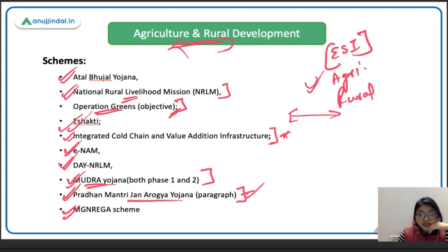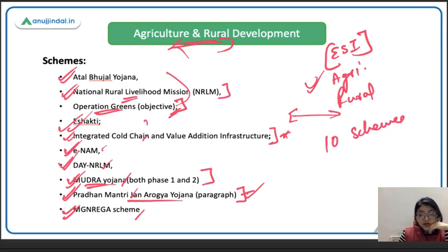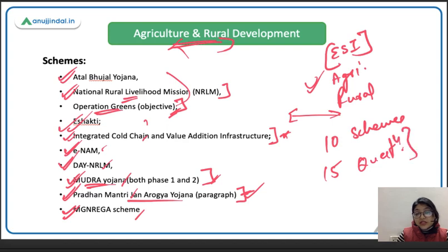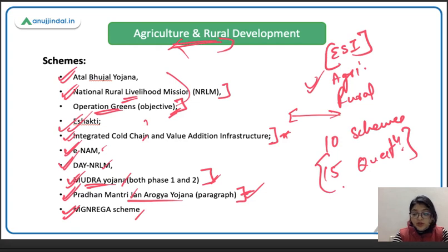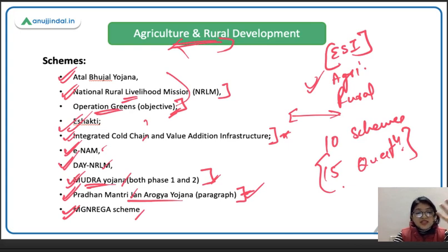Counting the schemes: Atal Bhujal, NRLM, Operations Green, E-Shakti, Cold Chain, E-NAM, PMJAY, MGNREGA, Mudra — about ten schemes were asked. Mudra was asked in both Phase 1 and Phase 2, with three to four questions, so approximately 15 questions came from schemes alone. These schemes cover water, rural employment, and food processing — all agriculture and rural development related.